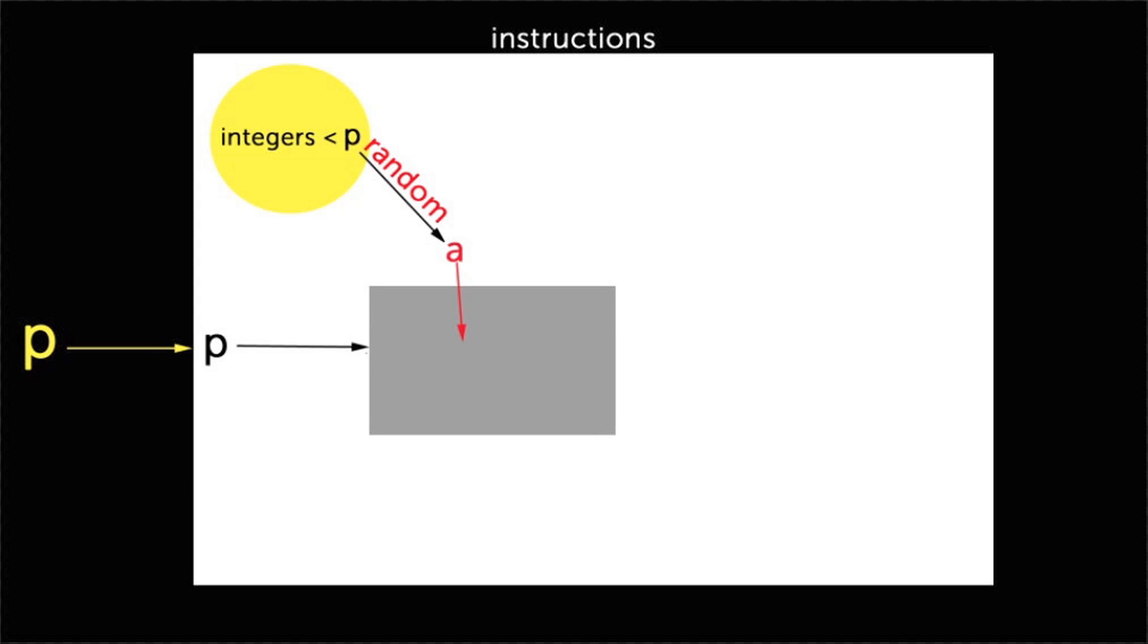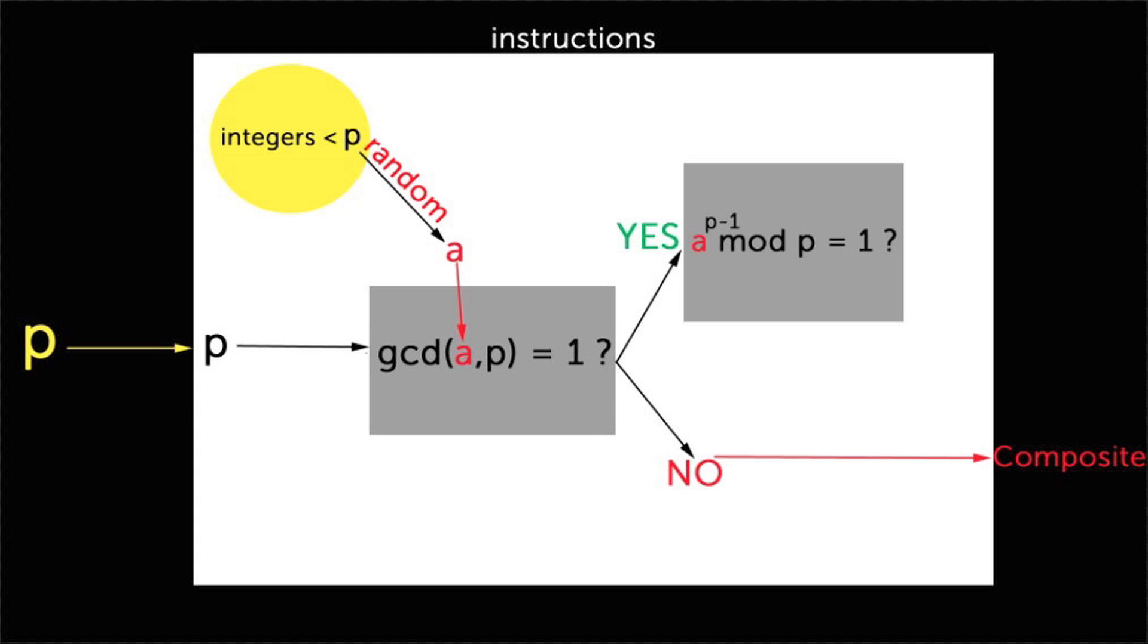And now we can ask, is the greatest common divisor of a and p 1? If not, if the greatest common divisor of a and p is greater than 1, then they share a common factor. And we've proven that p is composite, because a factor exists and we can halt and exit, and our algorithm will output composite. However, if yes, and we can ask the key question. Does a to the power of p minus 1 mod p equal 1?